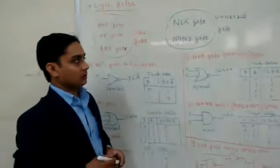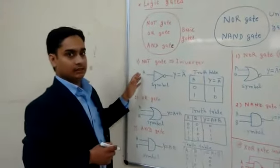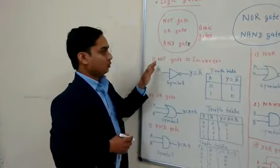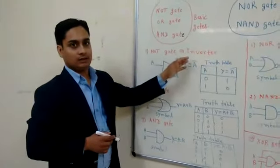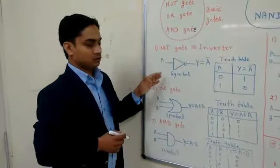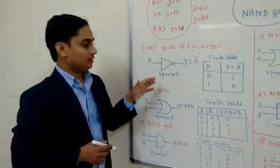Now we are going to discuss each and every gate. First one is NOT gate. We are going to discuss the symbol and truth table of each and every gate. This is the symbol of NOT gate.